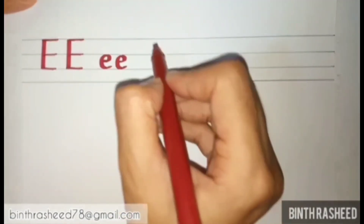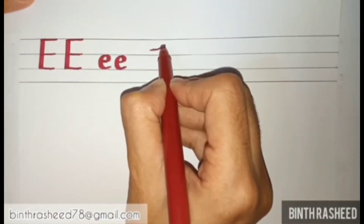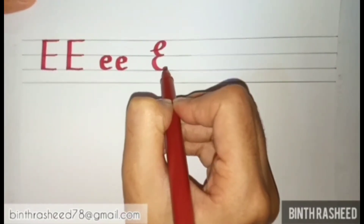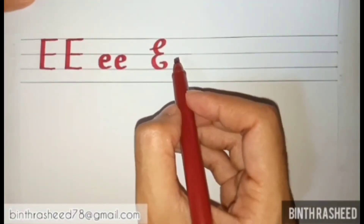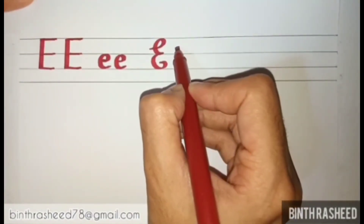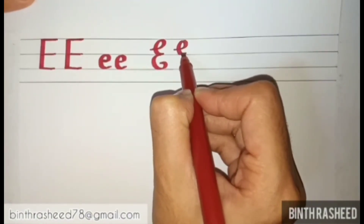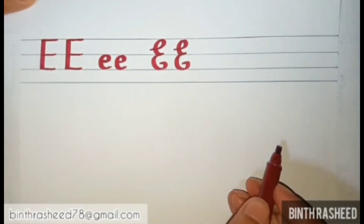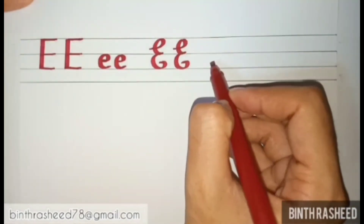Now we'll see how to write cursive capital E. You start from between the first and second line, draw a loop, come to the middle, then to the bottom, and end in a curl. Once more: a loop to the middle, curve to the bottom, and a curl — that's how we write cursive capital E.